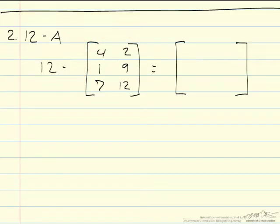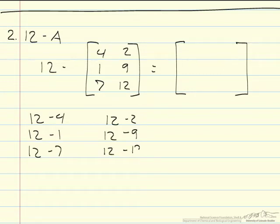So, for example, 12 minus 4, 12 minus 2, 12 minus 1, minus 9, 7, and 12. What you end up getting is this.